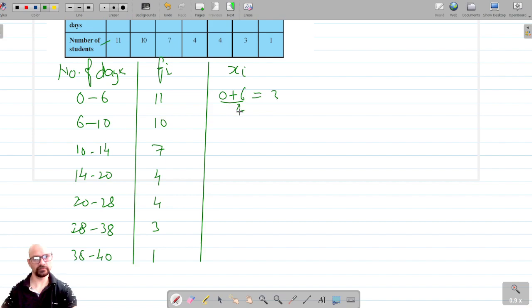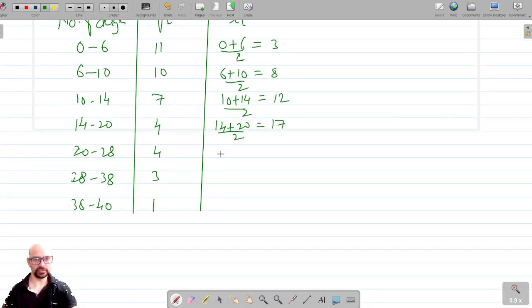The class mark is upper plus lower divided by 2, which is 3. Then 6 plus 10 divided by 2 is 8, then 10 plus 14 divided by 2 is 12.